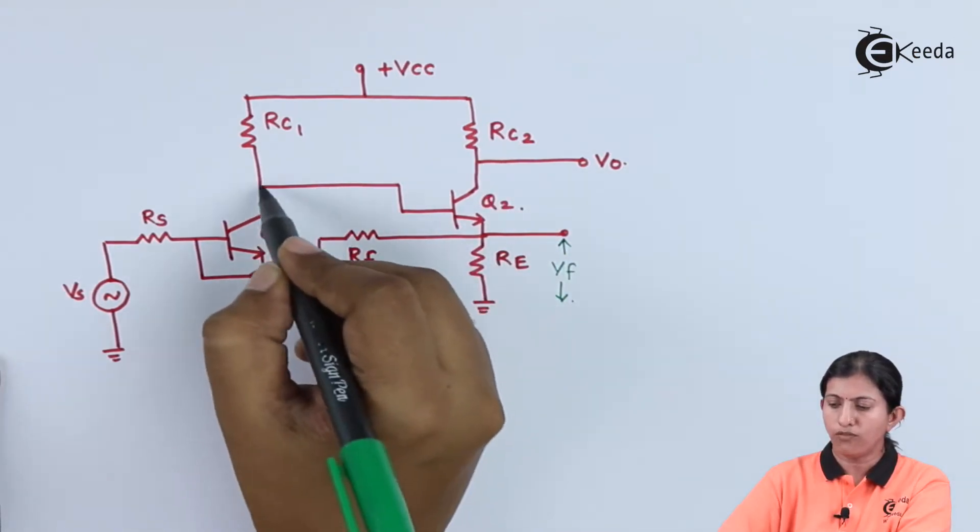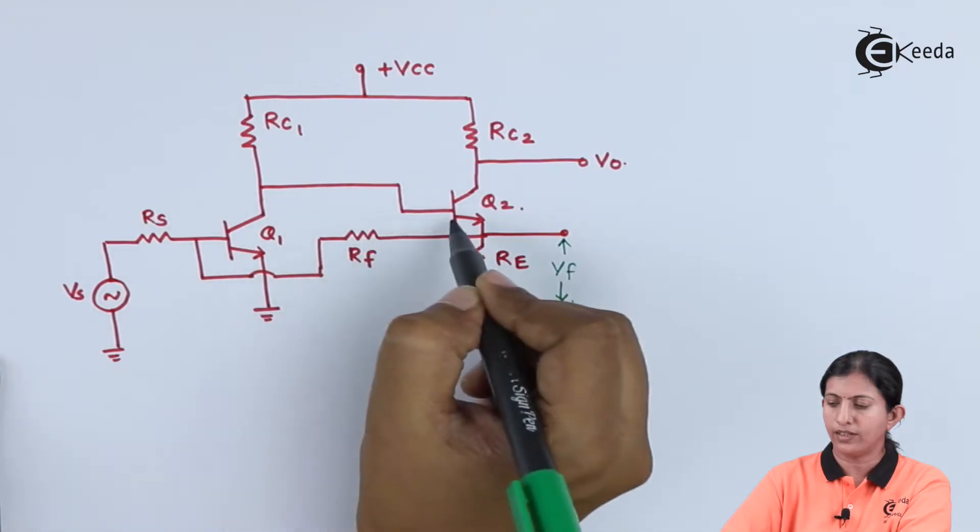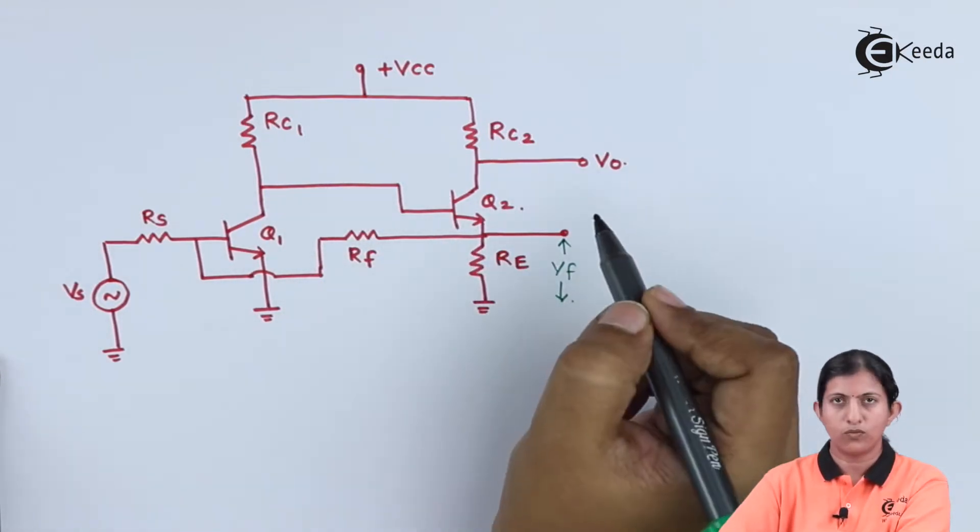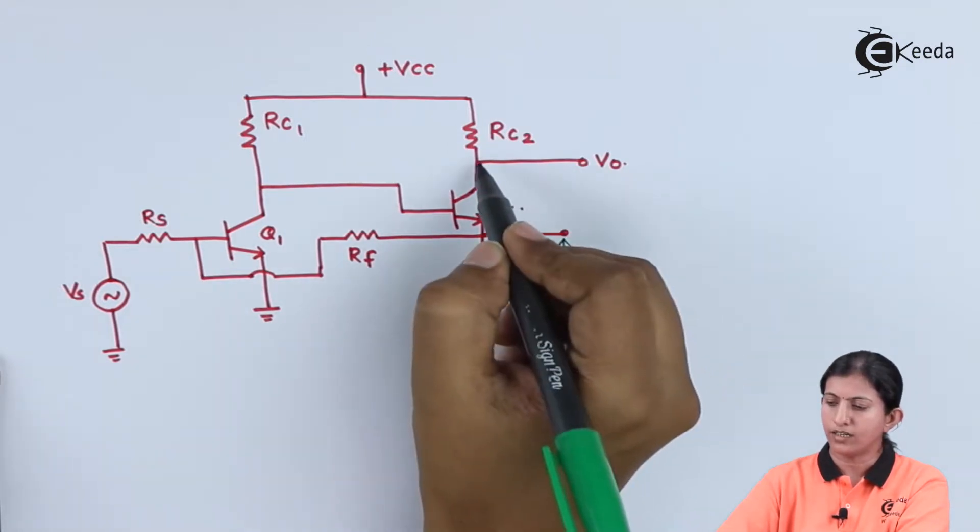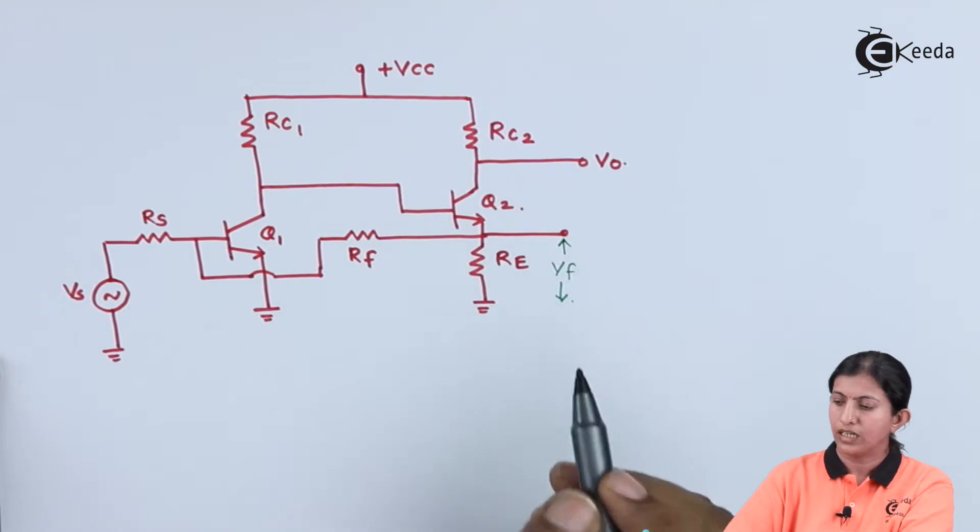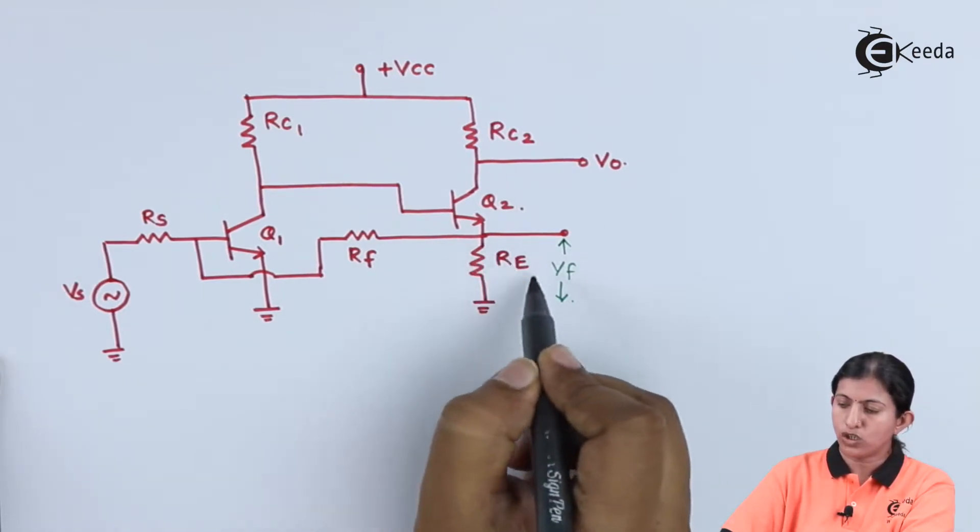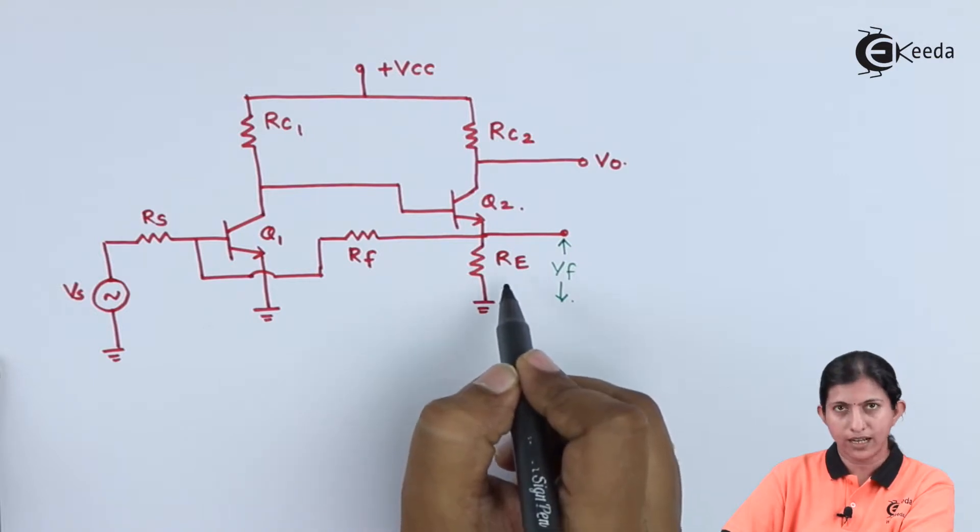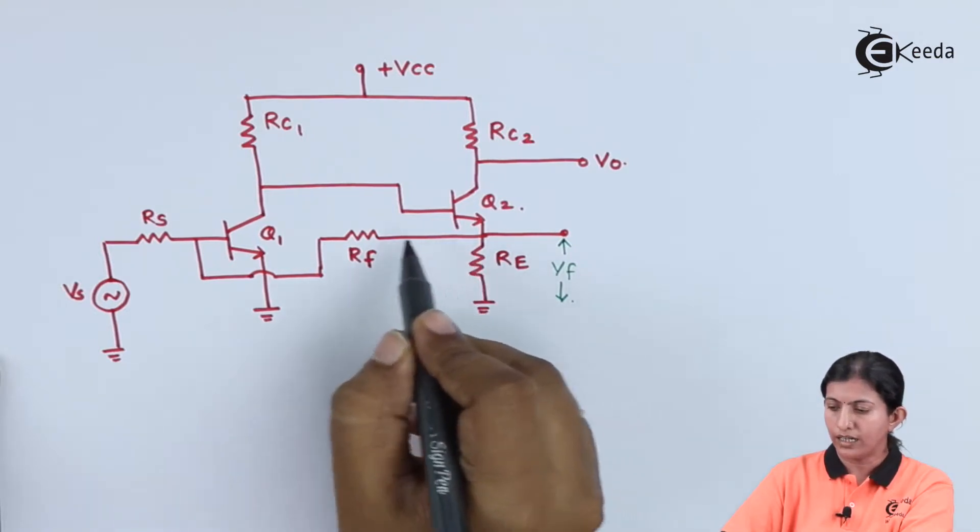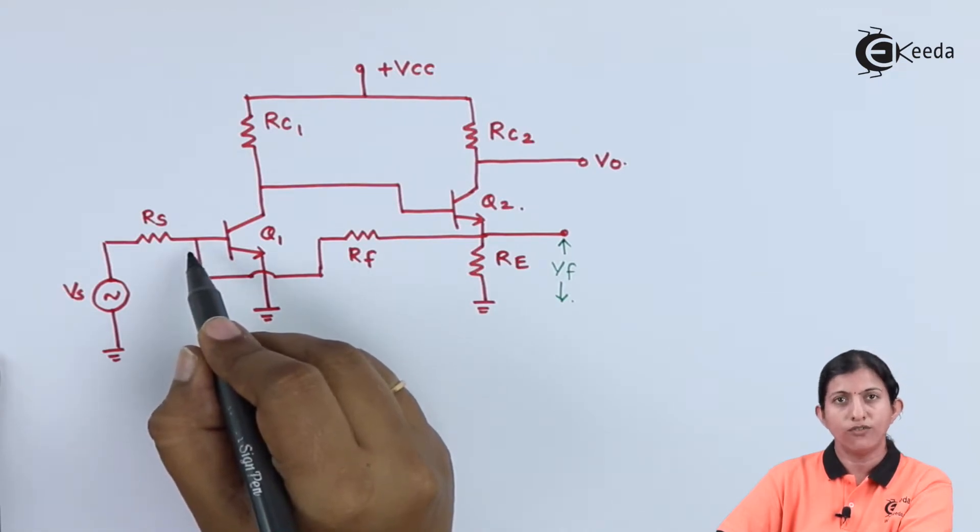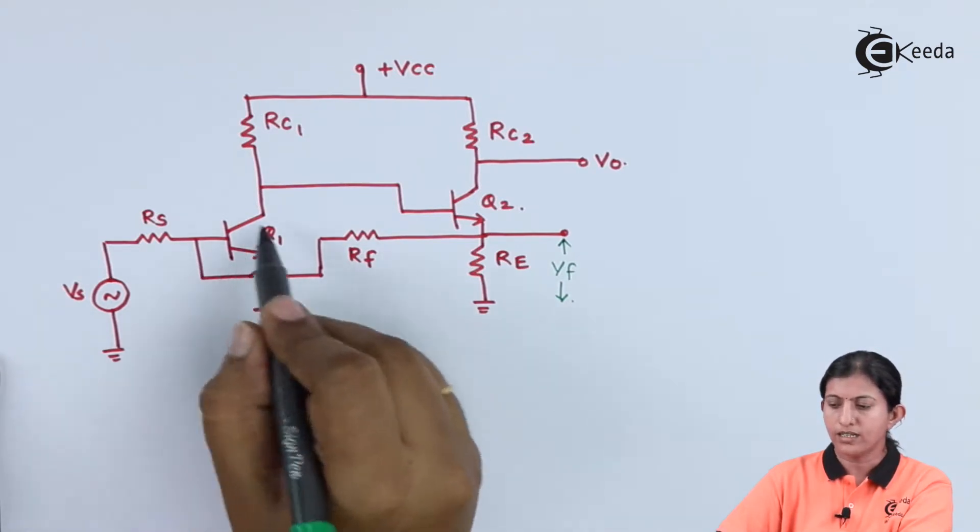The output of the first transistor is directly given to the second transistor. The total output voltage is taken across the second transistor's collector terminal. The voltage drop across Re of the second transistor is connected through Rf to the input of the first amplifier, Q1.